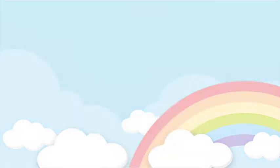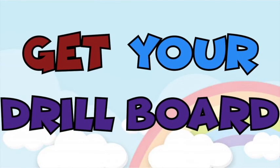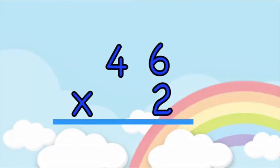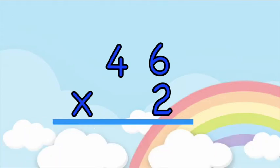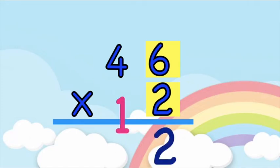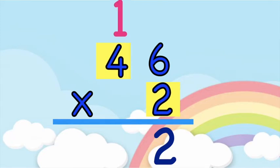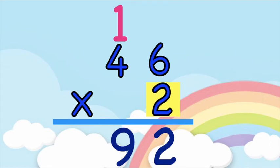So now children, it's your turn. Get a piece of paper, or if you have a drill board, you may use it. Let's have the first one: 46 times 2. 2 times 6 — very good, that is 12. So we will write 2 at the bottom, then carry 1 at the top of 4. And then 2 times 4, that is 8, plus 1 is equal to 9. So the product of 46 and 2 is 92.